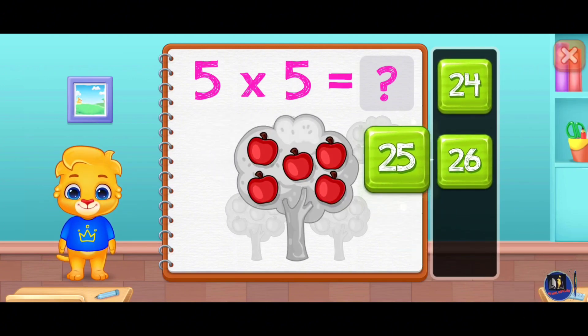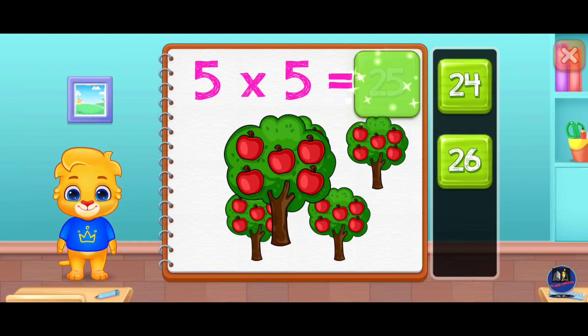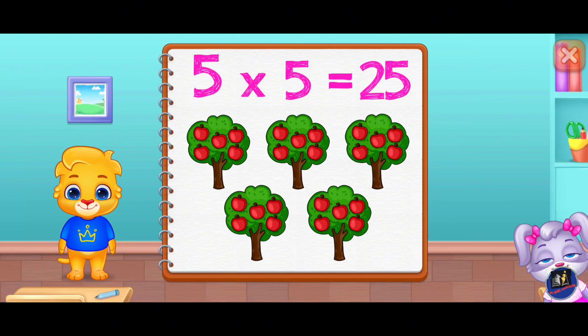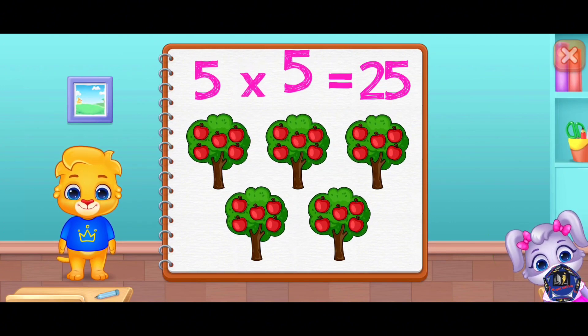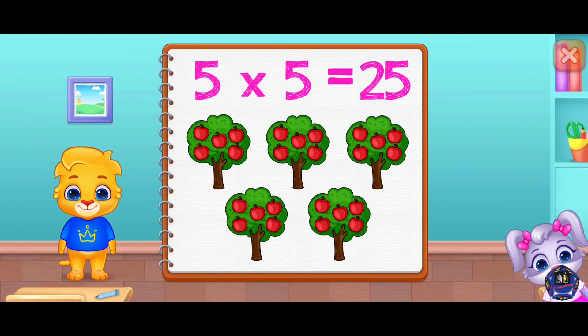Twenty-five. Five times five equals twenty-five.